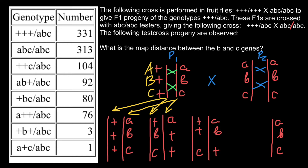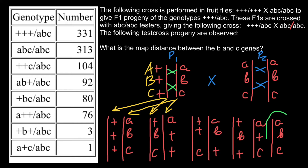Crossing over may also happen between both AB and BC simultaneously — a double crossover. In this case, we get two more recombinant variants: plus, small b, plus and small a, plus, small c. So we list these as well: plus, small b, plus and small a, plus, small c.